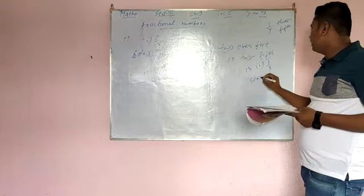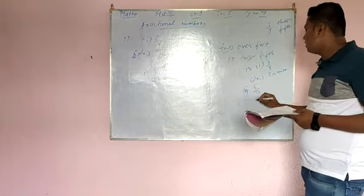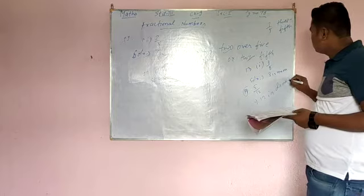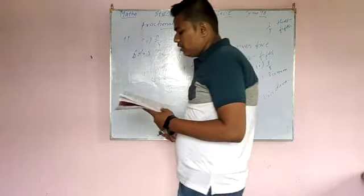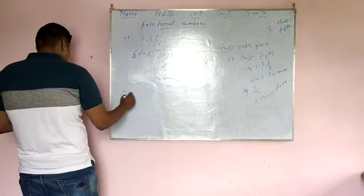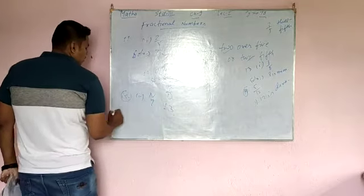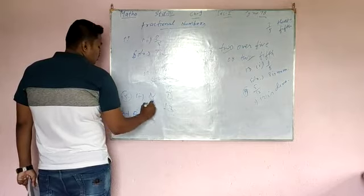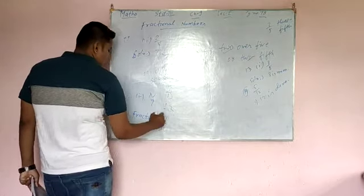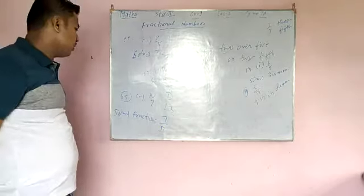In question 13, you will write that 3 is the numerator. In question 14, you have to write the fraction. The numerator is given as 7 and the denominator is 13, so the answer is 7 by 13. The numerator you always write on top.